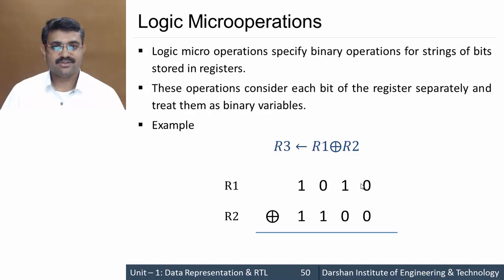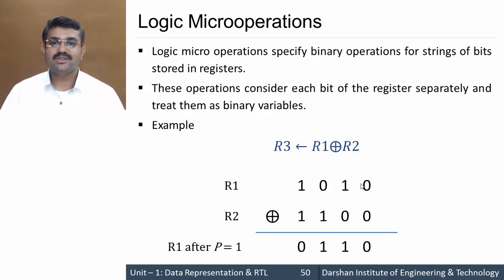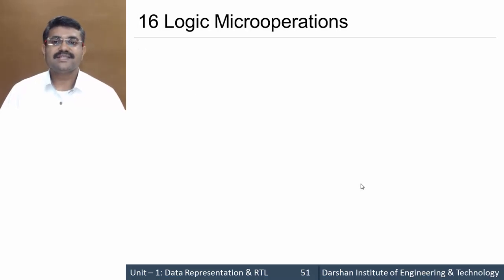When we perform XOR operation as per the truth table: 0 XOR 0 is 0, 1 XOR 0 is 1, 0 XOR 1 is 1, and 1 XOR 1 is 0. But this will be carried out only when p is 1. We know that p is a control function. We can have 16 various logic micro operations which can be carried out onto the registers.